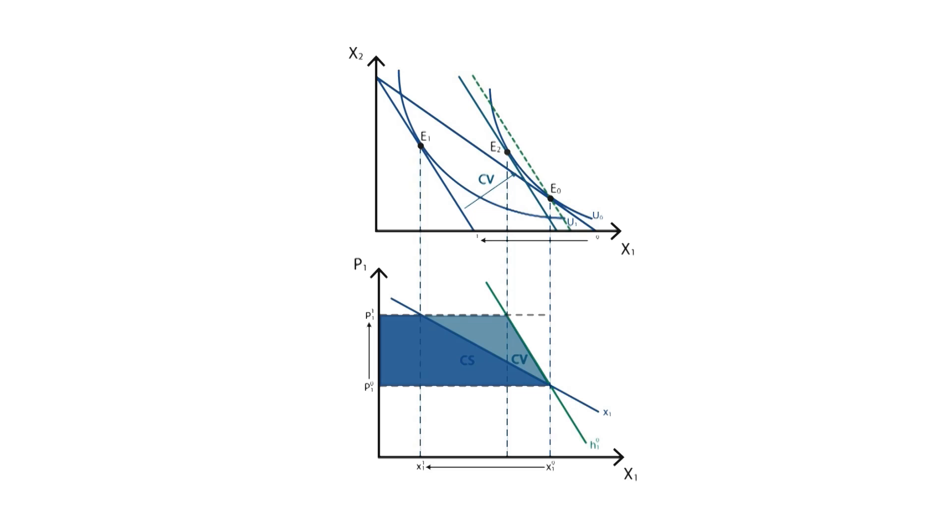However, as we can see, a higher indifference curve can now be reached using this new monetary budget, reaching a new theoretical equilibrium, E3.